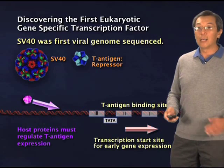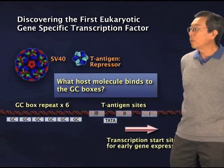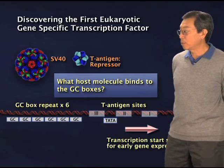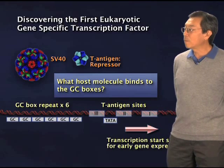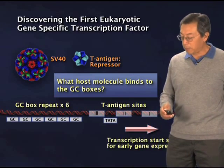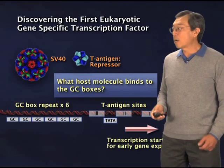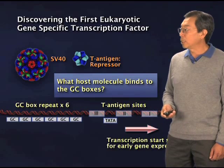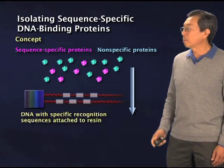I'll give you one example of how this jump into the host cell allowed us to discover the first human transcription factor. The question we asked back in the early 1980s was: what host molecule is regulating the transcription of this virus when the virus is in the host? We knew from the DNA sequence of the virus that there were six very GC-rich snippets of DNA that were regulatory — if we deleted them, the virus no longer expressed the gene of interest. So we knew something was probably responsible for recognizing these GC boxes, and it had to be a host gene.